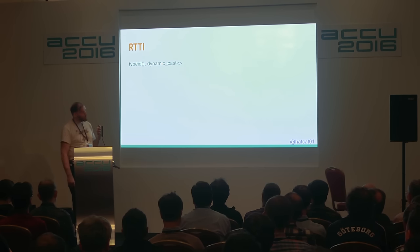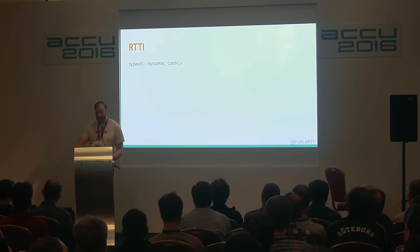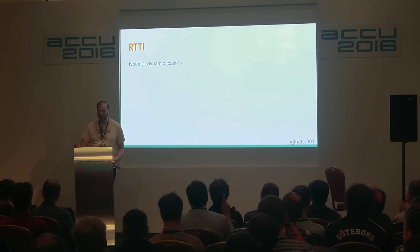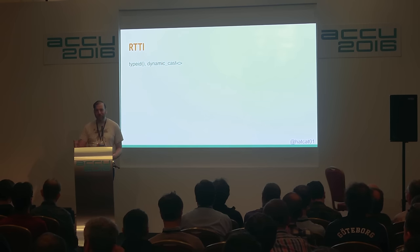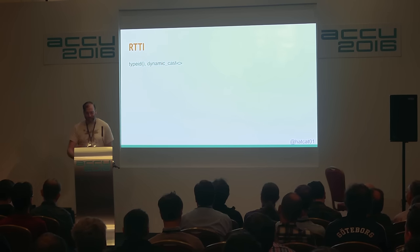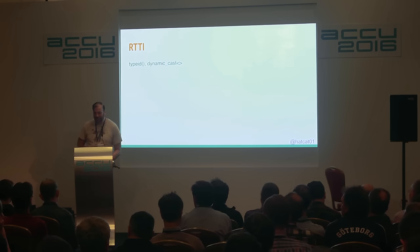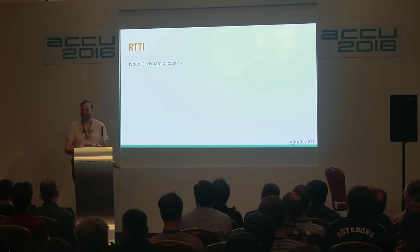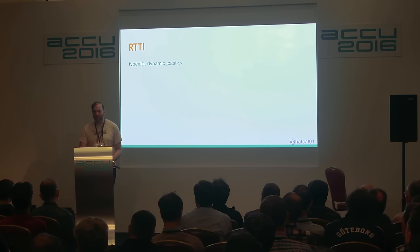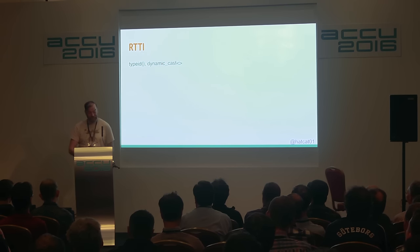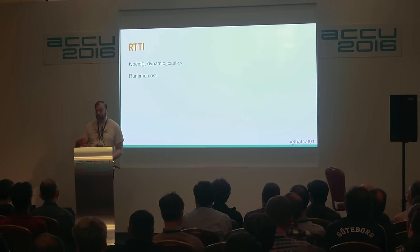I'm just going to touch on RTTI. It's the mechanism by which type_id, operator, and dynamic_cast are made possible. Does anyone actually use RTTI? I've never really used it so I'm not quite sure what benefits it offers. You might have a hierarchy needing a cross-cast that only RTTI can solve. We avoid RTTI in games, and avoiding it affects the way we write our code. It does come with a run-time cost — obvious from the name — and each object needs to store a word describing its type.